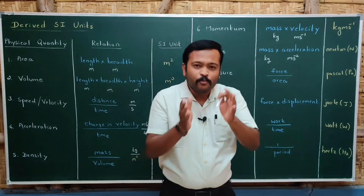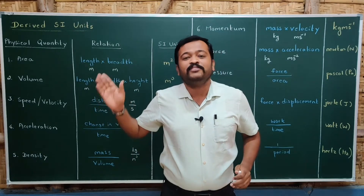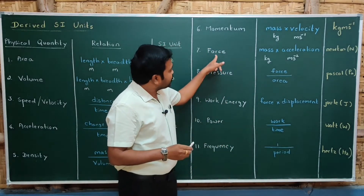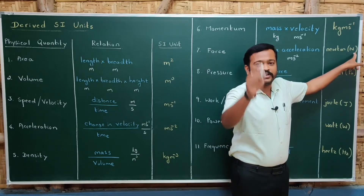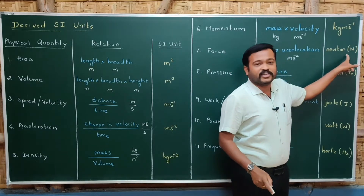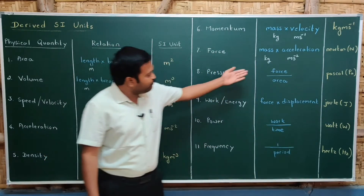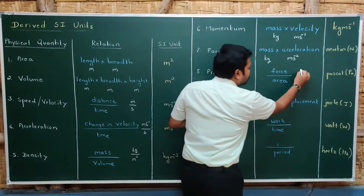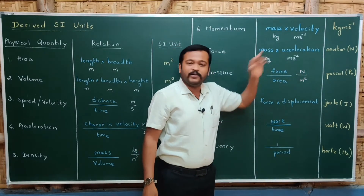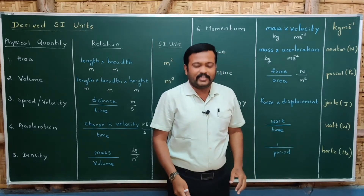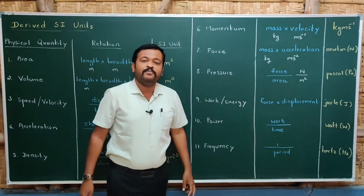In order to honor scientists who worked in a particular field, we name the SI units of some physical quantities after them. The SI unit of force is newton, symbol capital 'N' — though when writing the full name, 'newton' is written in lowercase. Similarly, for pressure — the formula is force divided by area. The SI unit of force is newton and area is square meter, so the SI unit of pressure is newton per square meter, also written as pascal, symbol 'Pa'.